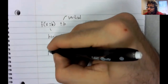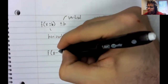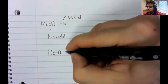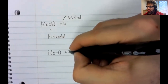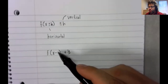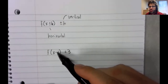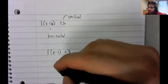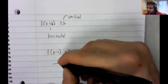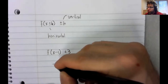So if you want to have both a horizontal and a vertical shift, you can. Inside the parentheses, that's horizontal. A negative sign shifts to the right.